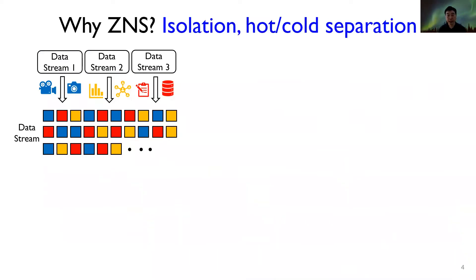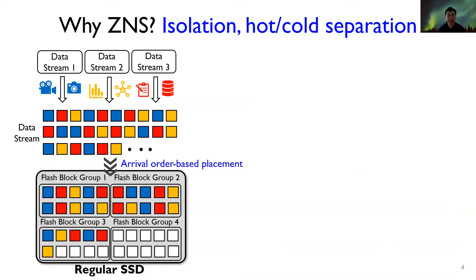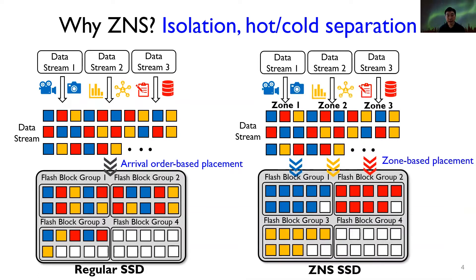The ZNS SSD has several benefits over legacy SSDs. When multiple applications generate multiple data streams to the storage, at a regular SSD, data blocks are placed based on their arrival order, so different data streams can be mixed within a flash block. For ZNS SSD, each data stream can be sent to different zones, and the SSD uses a zone-based placement policy. Therefore, performance isolation between different IO streams can be provided, and hot and cold streams can be separated.